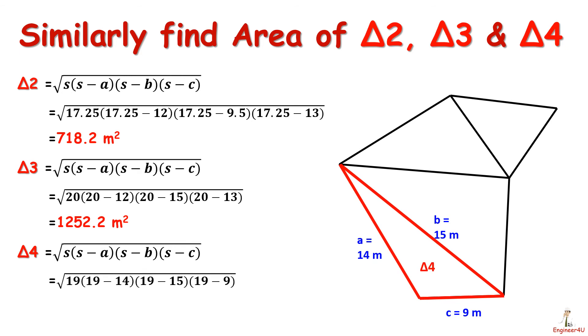We get area of triangle 4, that is 871.78 meter square.